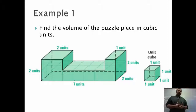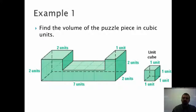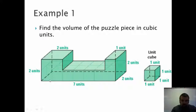So I see this kind of complicated shape. It says: find the volume of the puzzle piece in cubic units. A unit cube is one by one by one. I'm told it's two units deep, two units tall, one unit wide here, and it looks like it drops down one unit — four units wide, one unit tall, two units wide, two units down, and it's seven all the way along the bottom. At each of these spots, it's two units deep.